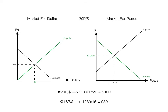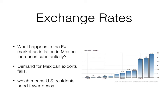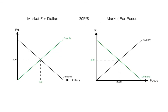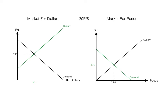What happens in the foreign currency market when inflation in Mexico increases substantially? This means it's more costly for Americans to buy Mexican imports — Mexican exports fall because their prices are higher and people are not buying them. This means U.S. residents need fewer pesos. We have a decrease in the supply of dollars — Americans are not going to be buying Mexican pesos — which leads to a decrease in the demand for pesos. Now it's 4 cents per peso, and we have 1,600 pesos being purchased in this market.